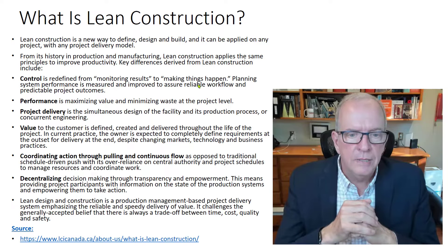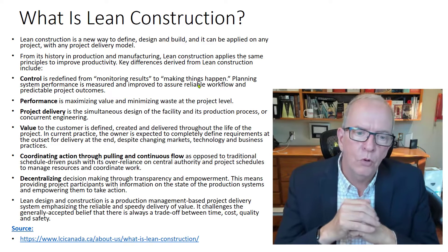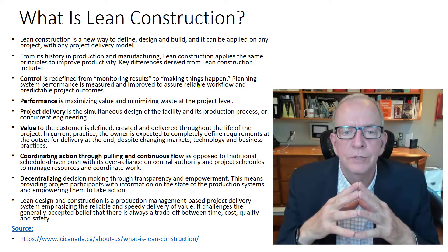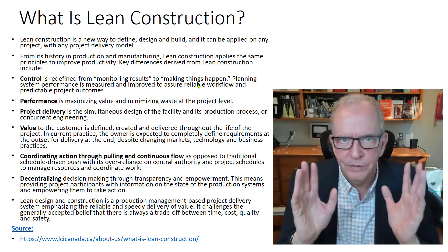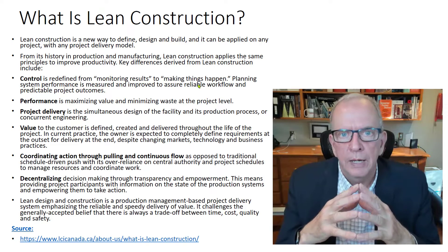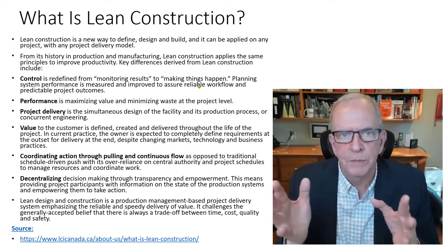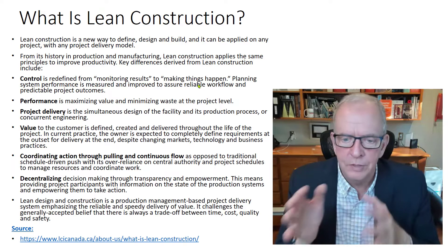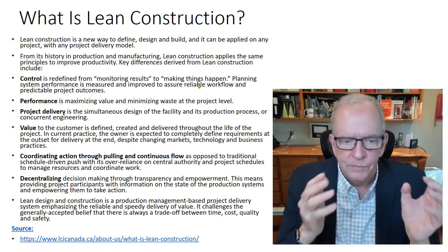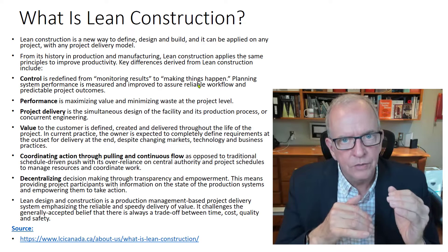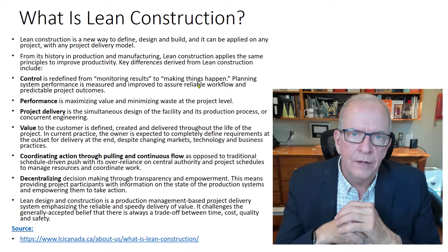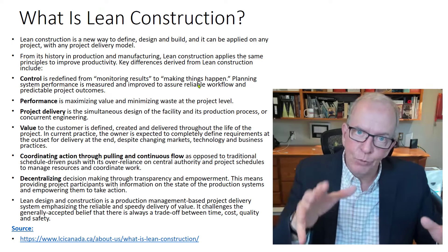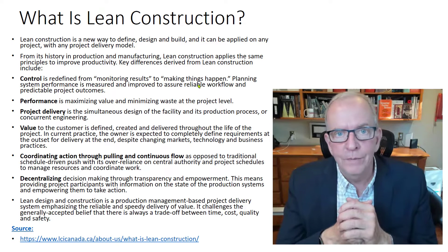Lean is also about coordinating action through pulling and continuous flow. With my degree students, I have them find a construction project and photograph it over a six-week period — and inevitably some groups come back saying, 'Nothing really happened.' That's a perfect example of one of the eight areas of waste in lean construction: wait time. Workers waiting for work, and work waiting for workers.